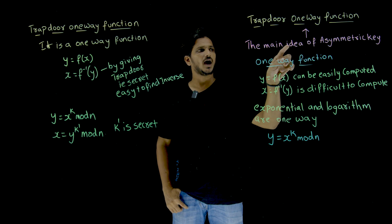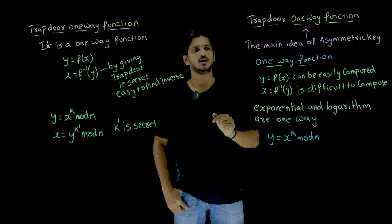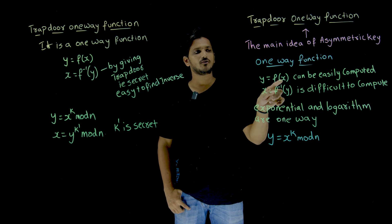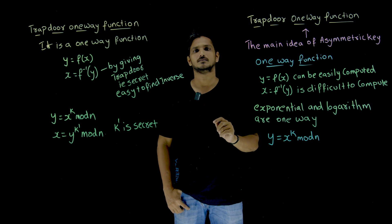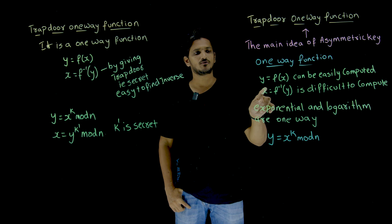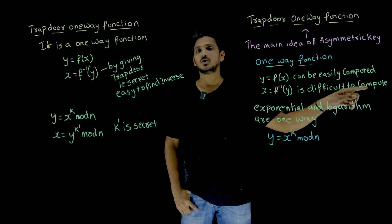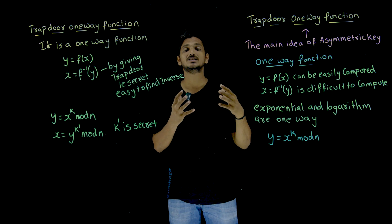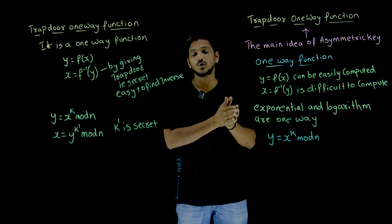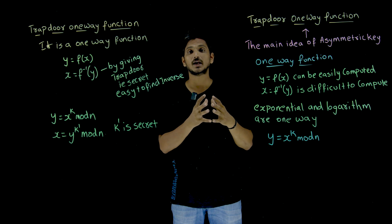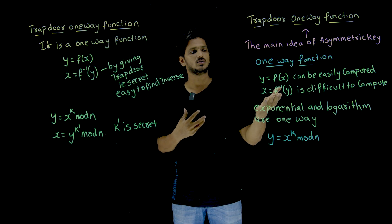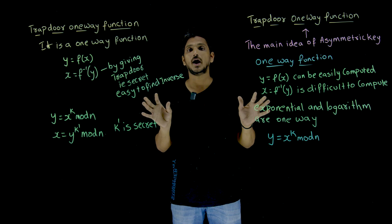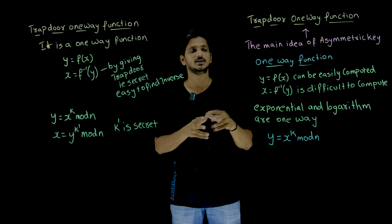The main idea of asymmetric key cryptography uses the trapdoor one-way function. First we need to understand what is meant by a one-way function. A one-way function means: given x, y = f(x) can be easily computed. But the opposite — if y is given, finding x = f⁻¹(y) is difficult to compute. We call these one-way functions. 'Easily computed' means computable in polynomial time; 'difficult to compute' means it takes exponential time — essentially, it will never end and we will never get the output.